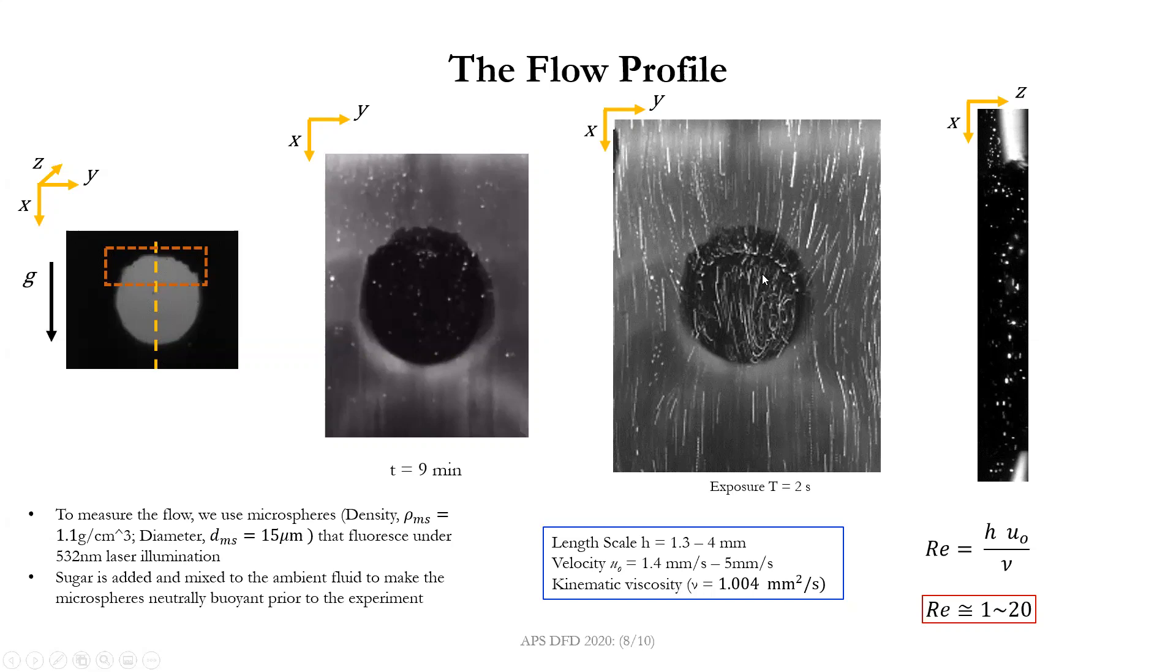We can also use these trackers to estimate the velocity in different regions and get an estimate of the Reynolds number. We find the Reynolds number to be between 1 and 20 for this setup. Of course it changes a little bit depending on which part of the system we're probing.